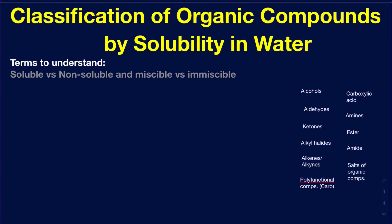Hello, everyone. In this video, I'm going to be classifying organic compounds based on their solubility in water, and I'm going to be classifying those in terms of their functional groups — which ones could possibly dissolve in water, and up to what limit. We're talking about how many carbons or how big the compound needs to be in order to dissolve in water, if at all. Before we go into details, I'm making a chart here.